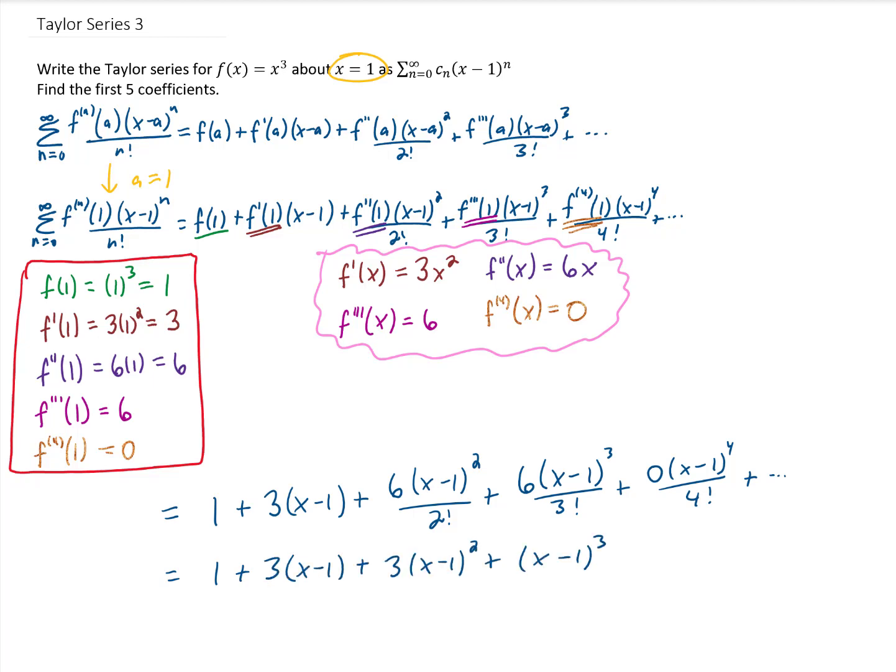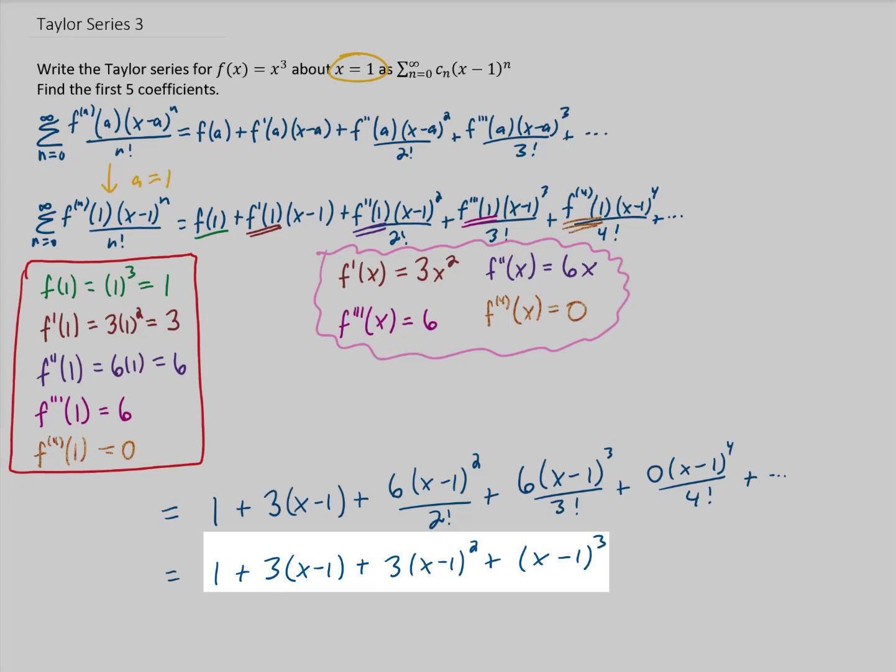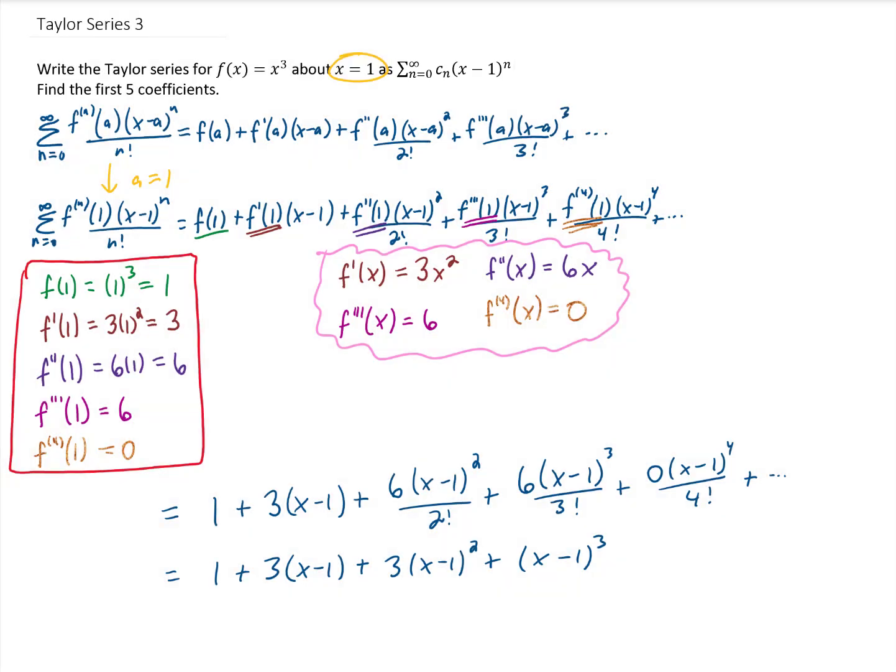And what you'll notice with our final answer is that every term has a coefficient on it, and every term has an increasing power of x minus 1 on it. So our final answer does in fact look just like this general formula they've given us up here in the problem. To get a final answer, we just need to read off the coefficients. The first coefficient in this series is 1, the second coefficient is 3, third coefficient is 3, the fourth coefficient is 1, and the fifth coefficient in every coefficient after that, in fact, is going to be 0. So that is it.